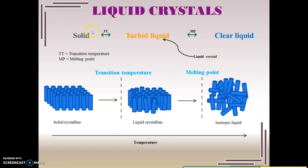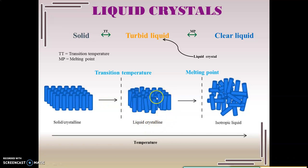As you can see in the figure, we have a solid or crystalline state of matter. When I start heating that solid, it changes into a turbid liquid state. This intermediate state which is attained is called the liquid crystal, and the temperature at which this transition occurs — from a pure solid to a turbid liquid — is called the transition temperature. From the solid crystalline state, where molecules are orderly arranged in their respective positions, you heat and reach the liquid crystalline state, where the molecules are no longer orderly arranged in fixed positions.